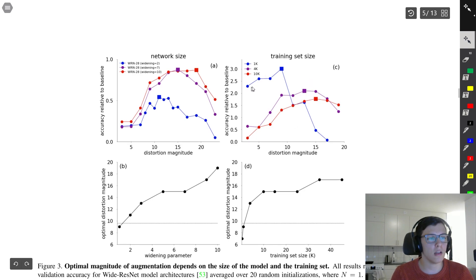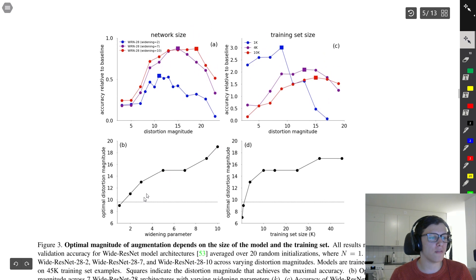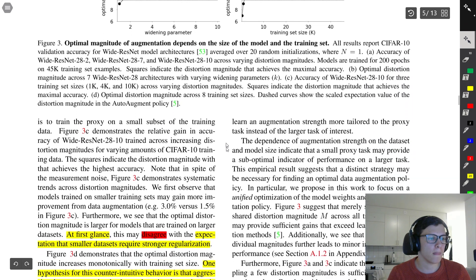In this graph, the blue represents a dataset size of 1000 examples, purple is 4000, and red is 10,000. They show that having a small dataset size, they can actually improve the accuracy more than if they would have a larger dataset. Essentially, the conclusion is that data augmentation is more effective the smaller dataset you have. For the bottom left graph, as you increase the model size, the optimal distortion magnitude also increases.